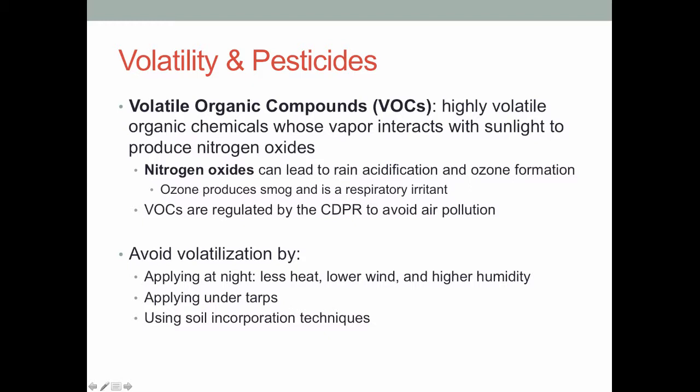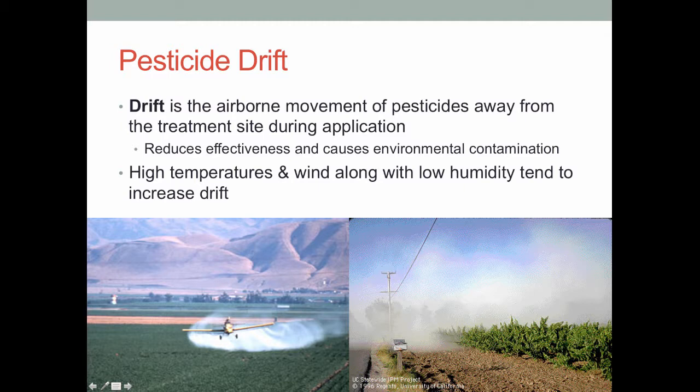General policies to avoid volatilization are more or less to avoid those environmental conditions that cause the chemical to be volatile. So generally, applying at night when it's less hot, there's less wind, and humidity is much higher. Similarly, by applying underneath tarps or using techniques that incorporate the chemical into the soil, you can really avoid a lot of volatility.